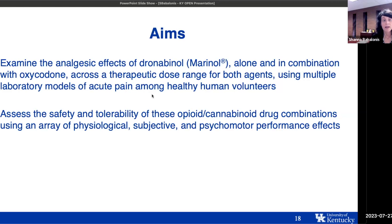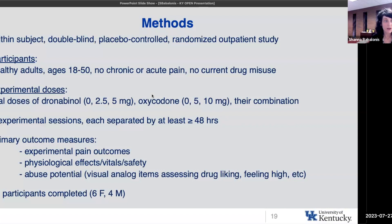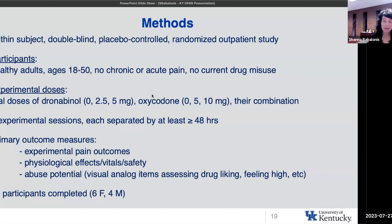This was a within-subject, double-blind, placebo-controlled, randomized study. We enrolled healthy adults ages 18 to 50 with no chronic or acute pain and no current drug misuse. We gave relatively low doses of dronabinol — placebo, 2.5, and 5 milligrams, which are very low doses, the starting dose being 2.5 — and oxycodone at 0, 5, and 10 milligrams, also relatively low starting doses for acute pain, administered orally via capsule. We looked at those doses alone and in combination, requiring nine experimental sessions. We looked at experimental pain, physiological effects, safety, and abuse potential. Ten participants completed this study.